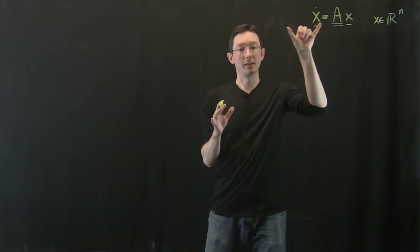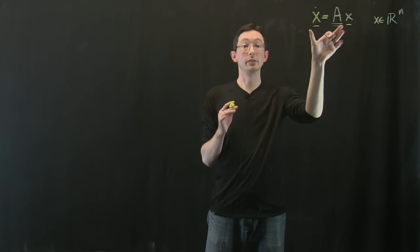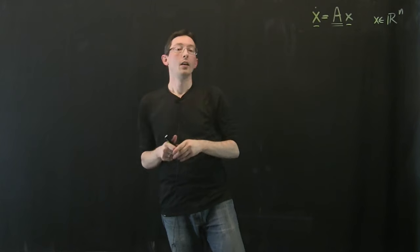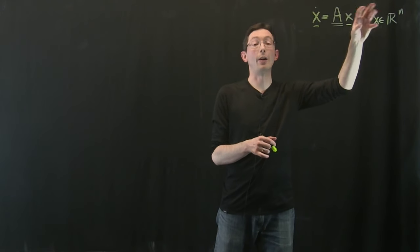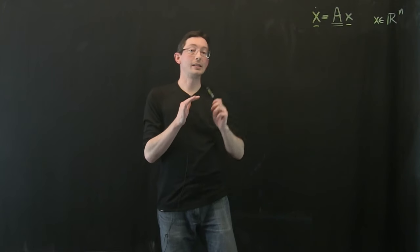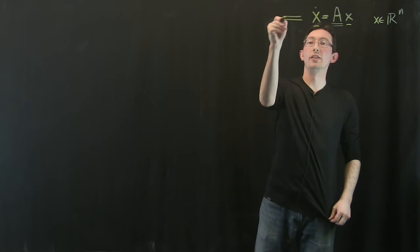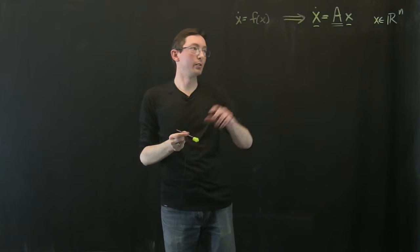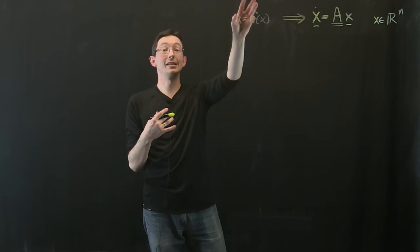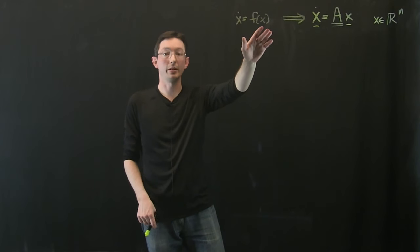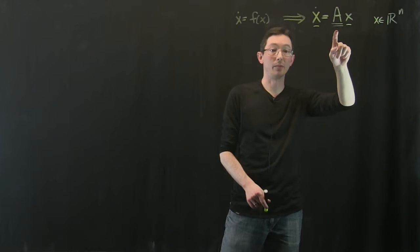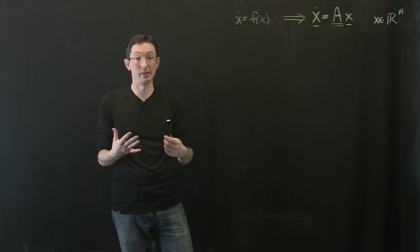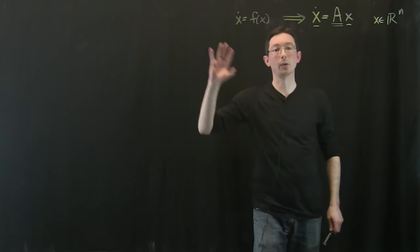Last time we looked at the dynamics, stability, and solution of a system of equations x dot equals Ax in continuous time and discrete time. The last thing I want to tell you about pure linear systems without inputs or sensors is how you can get these systems from nonlinear dynamical systems x dot equals f of x. We're going to demonstrate this on the pendulum system, and I'll write down the steps and then work it out.